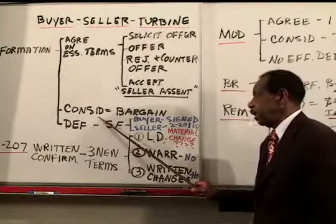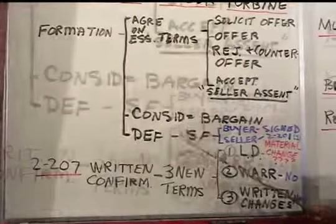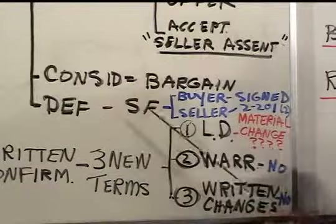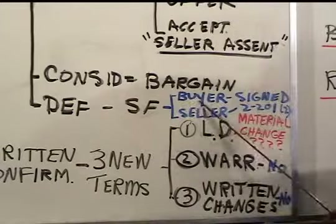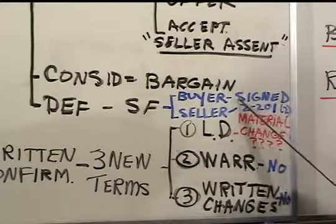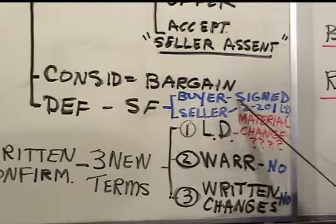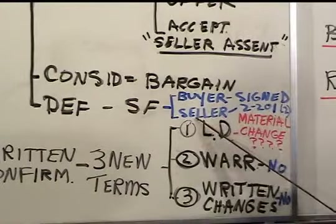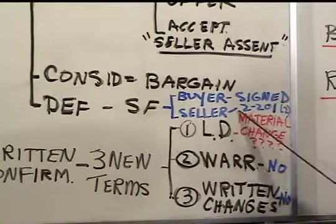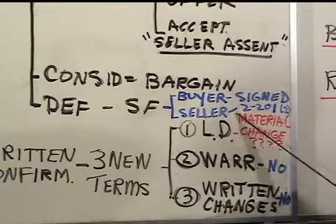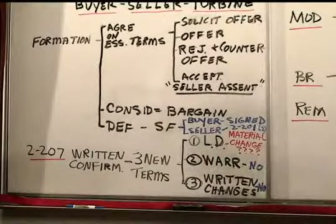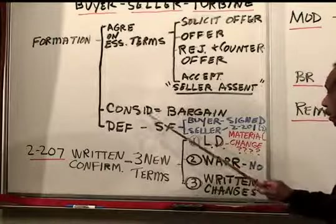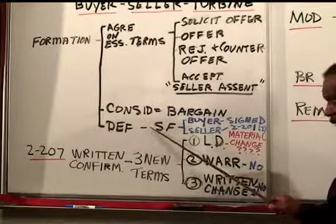Next, was this part of a bargain? Obviously, these people are trading money for a turbine. As to defenses to the formation of a contract, the applicable one is the statute of frauds. Buyer satisfied the statute of frauds because buyer signed the written confirmation that went out the next day. Seller satisfied the statute of frauds by using UCC 2-201, subsection 2, the between-merchants provision. That means you have to establish that buyer and seller are both merchants. So that completes the formation of the contract: the parties agreed on essential terms, it is a bargain, and the statute of frauds has been satisfied.